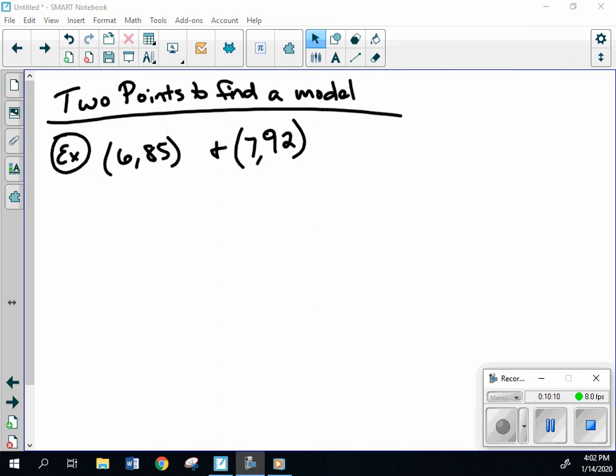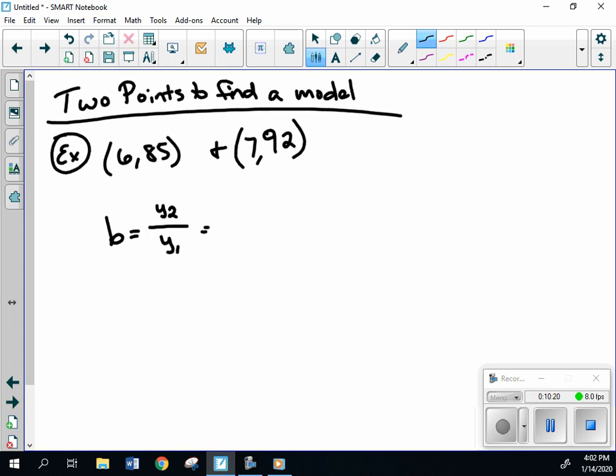Let's say I have a point at 6, 85 and at 7, 92. This only works right now if you have two consecutive points. So notice I go from 6 to 7. The B value is Y2 over Y1. So you have 92 over 85 to give us 1.082 roughly. So this is our B value.